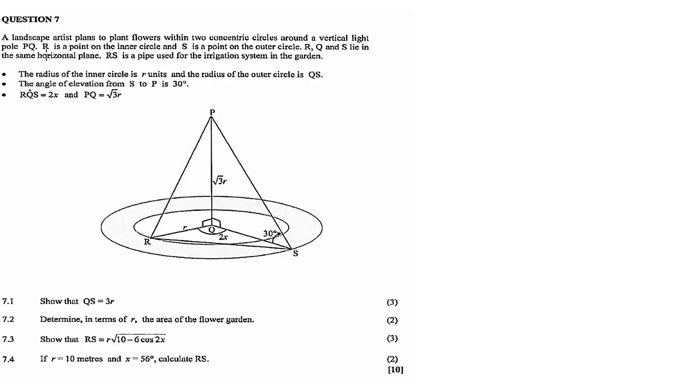R is a point on the inner circle, and S is a point on the outer circle. Now RQS lie on the same horizontal plane, and then RS is a pipe used for the irrigation system in the garden. The radius of the inner circle is r units and the radius of the outer circle is QS.